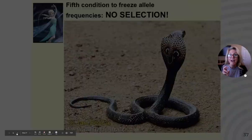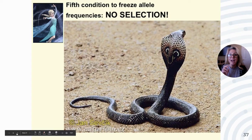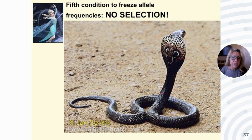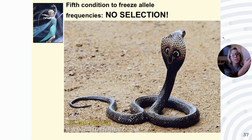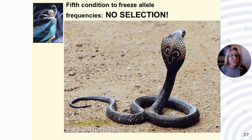Fourth condition: you must have absolute random mating — no one organism is better than another. And fifth: no selection. As an example, look at the back of this snake — it looks like a face. A predator would avoid it and come around to the other side, where the real face is and gets bitten. Those snakes with this face on the back were more likely to survive and reproduce. Can we stop selection? Generally, no — some traits are adaptive and increase fitness.